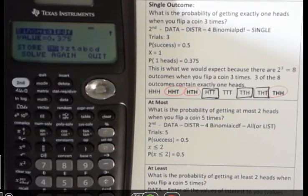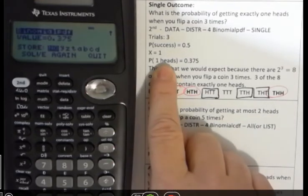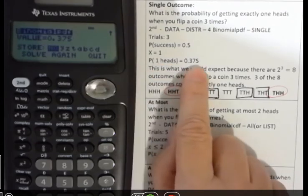It's going to tell me the value is 0.375. That means the probability of getting one head when you flip a coin three times is 0.375.